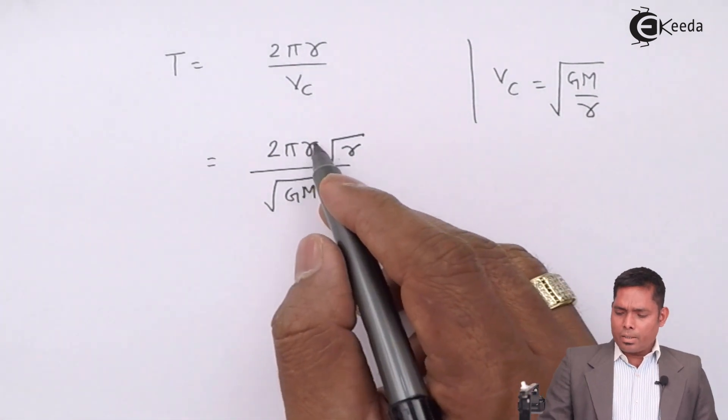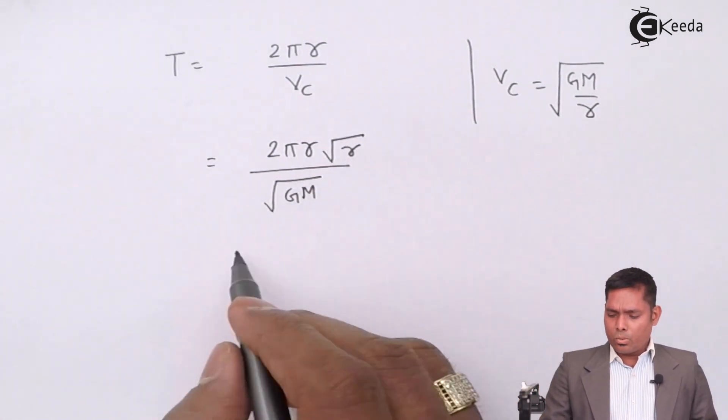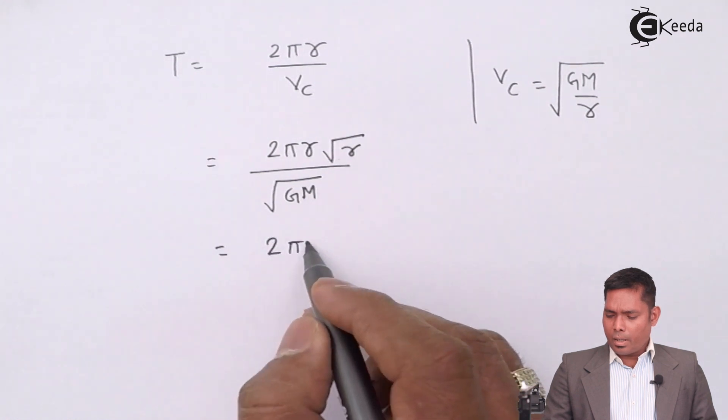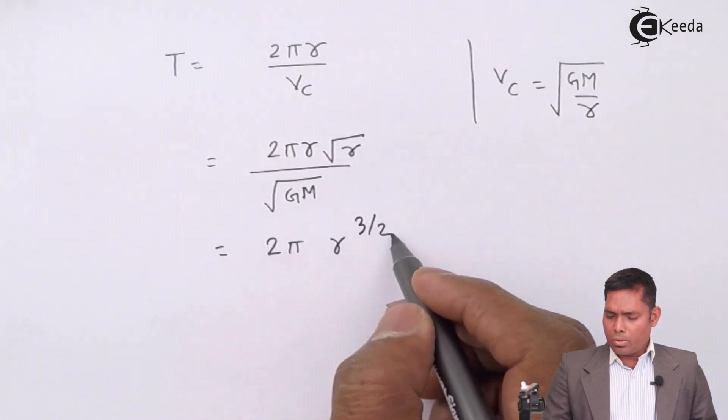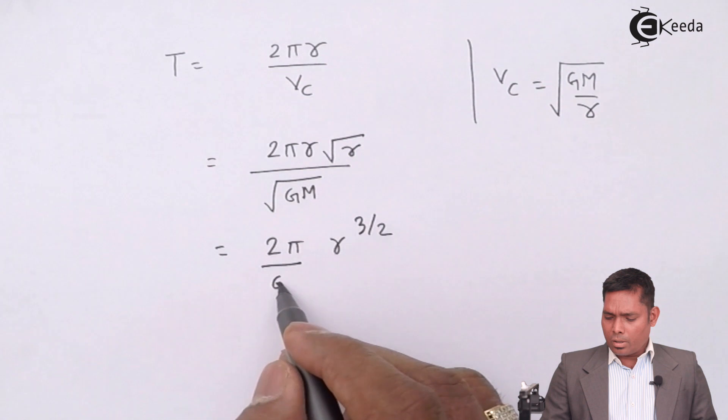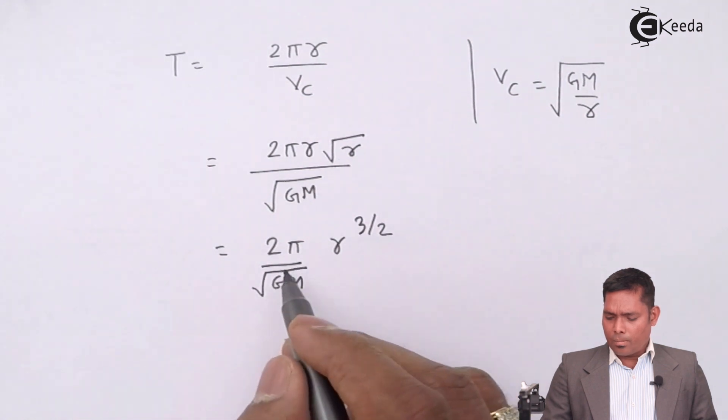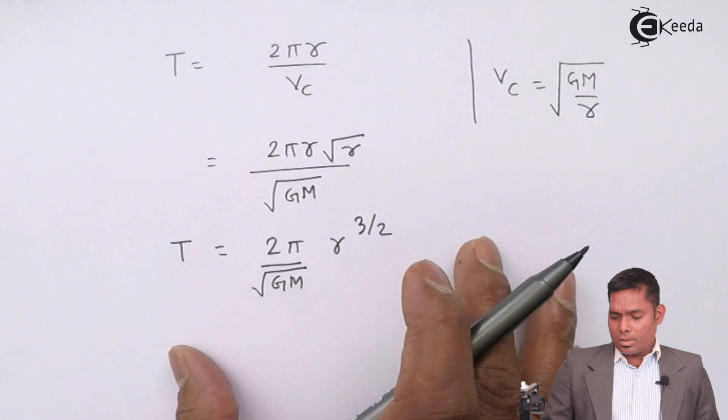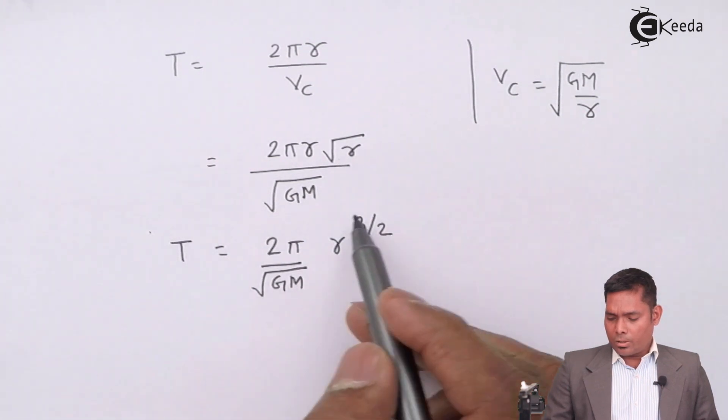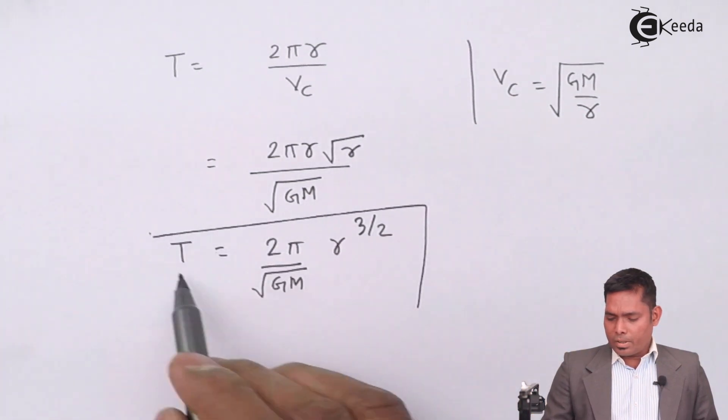This is root and this is power 1, this power is half, this power is 3 by 2, so it is 2 pi r to the power 3 by 2, and this is under root of gm. This expression is the expression for the periodic time.